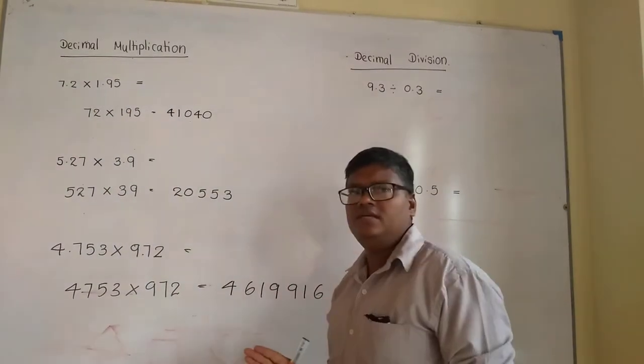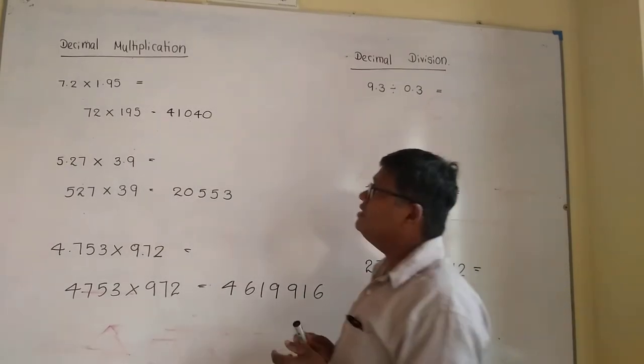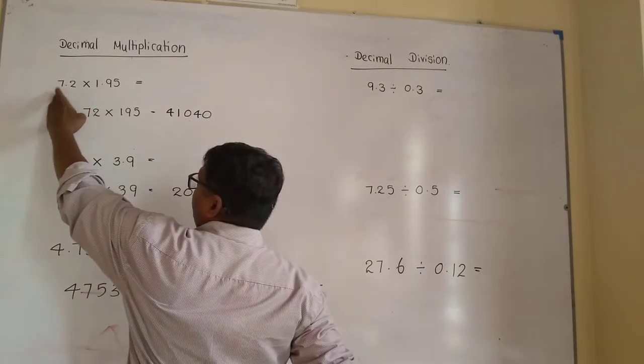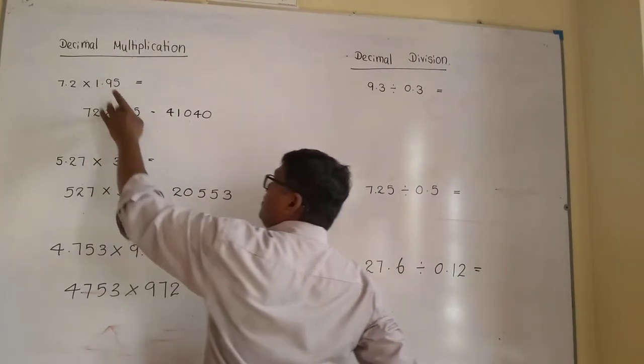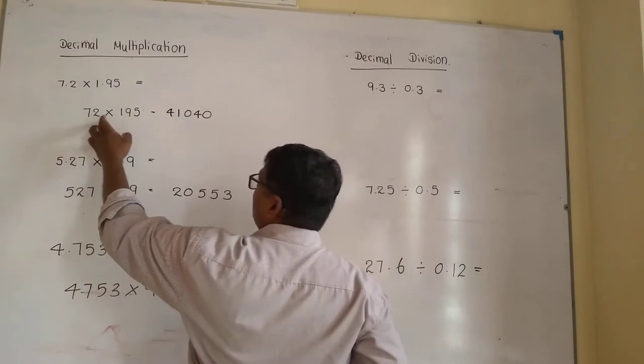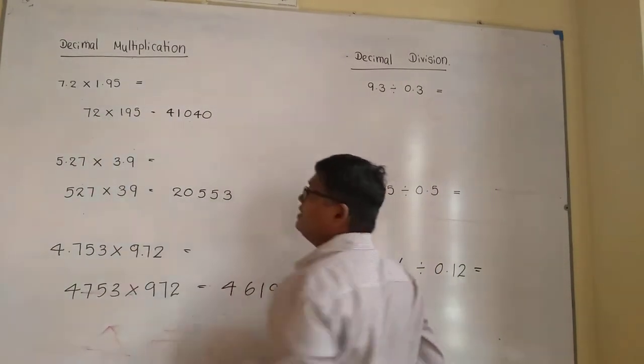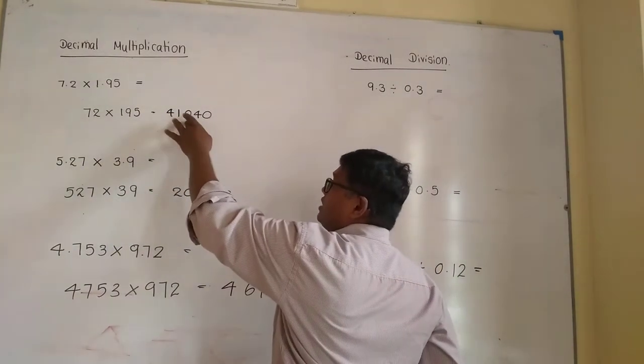It is very simple. If you understand properly, you can easily get the answer. Forget the decimal: 7.2 becomes 72, and 1.95 becomes 195. Then multiply 72 by 195. The answer is 41,040.